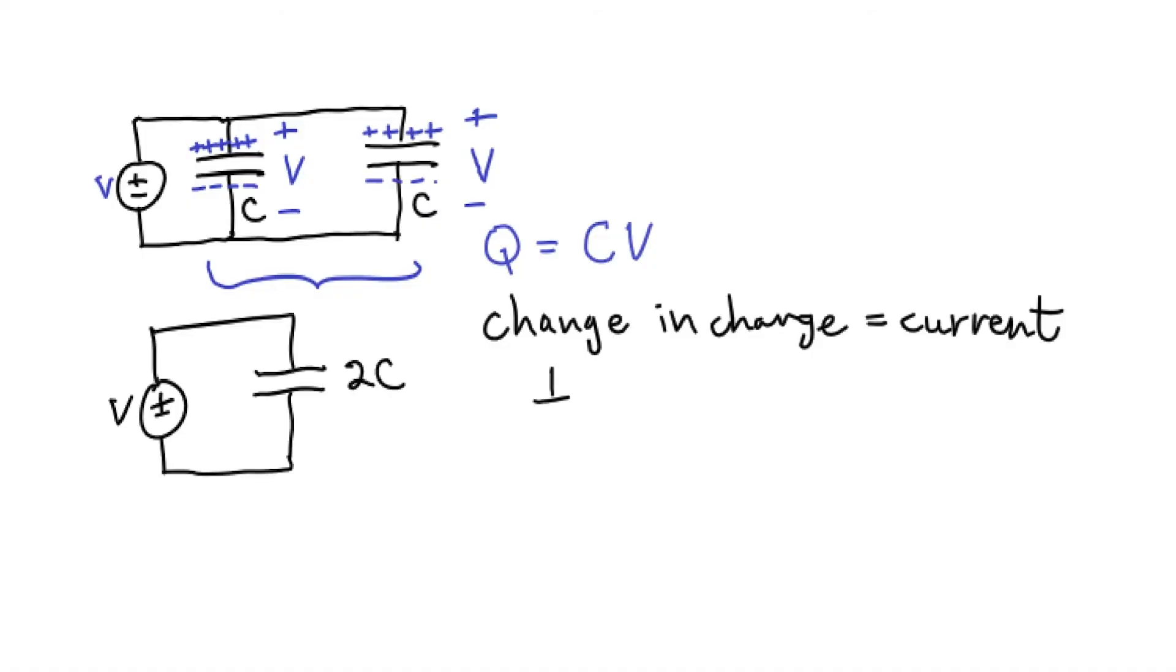So I can write that current I equals the time derivative of the charge, and continuing on from the equation, I have the time derivative of CV, and a capacitance value is constant, so I equals C dV over dt. And this equation will be useful later when we start looking at RC time constants.